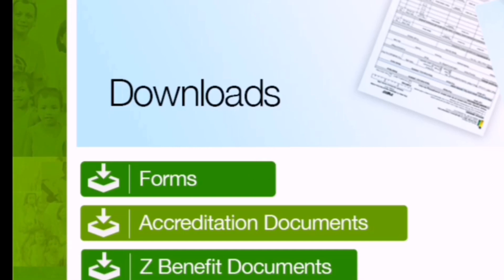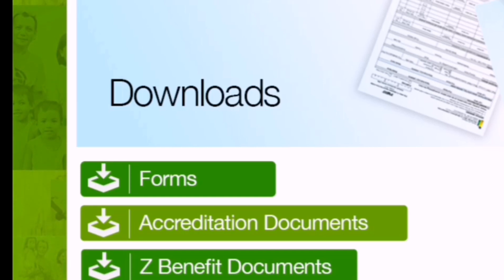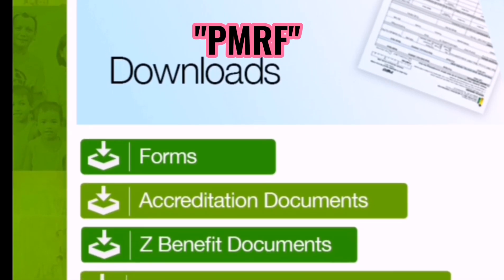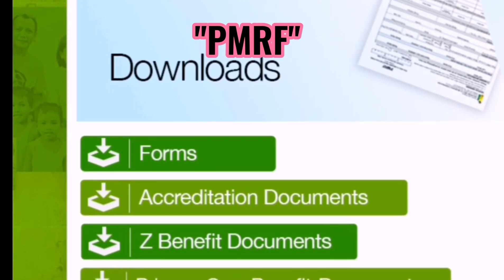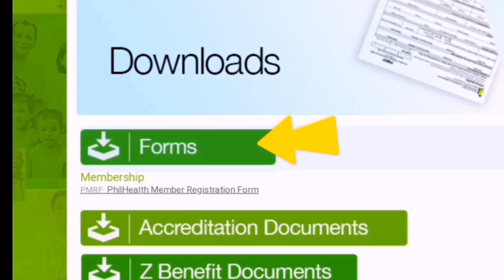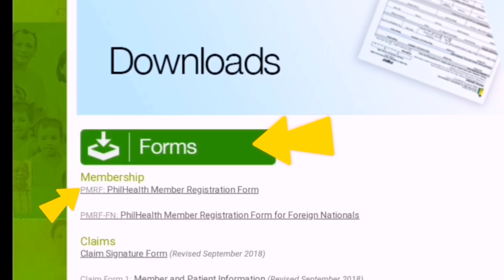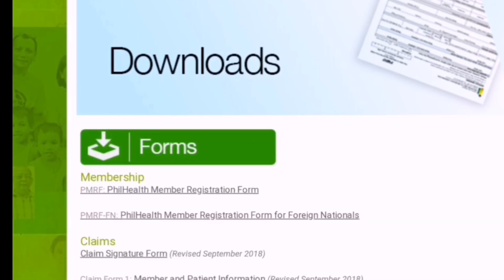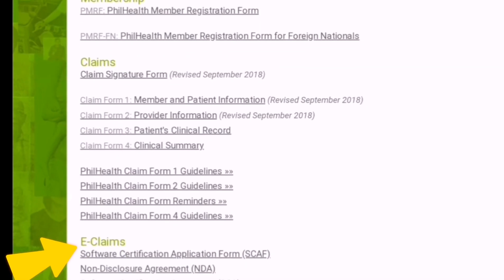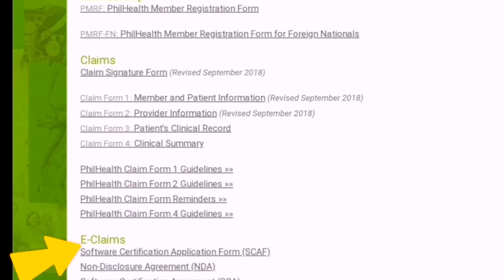You can see what is under Forms. We are looking for the PhilHealth Member Registration Form or the PMRF. Click the Forms option. Under Forms, there is Membership, Claims, and other claims categories.